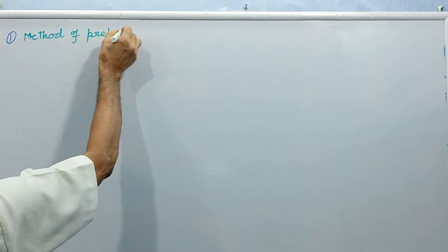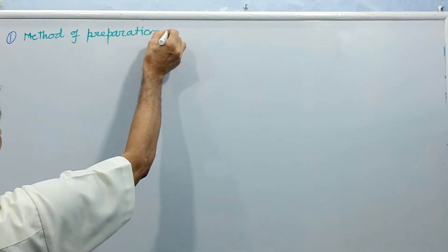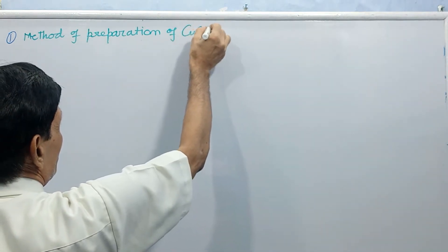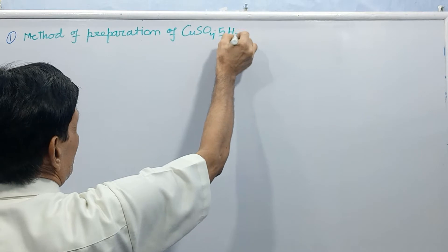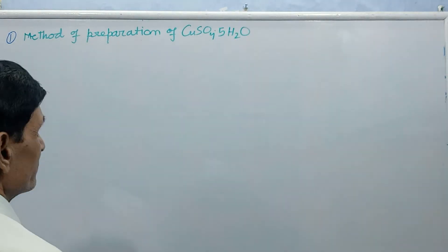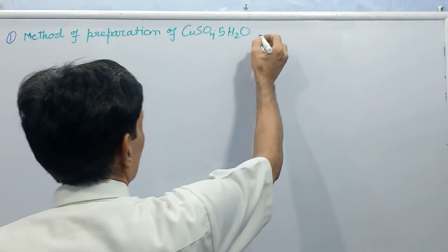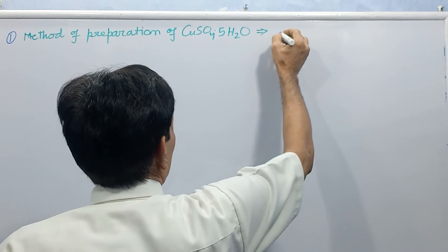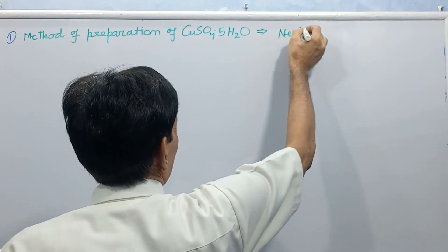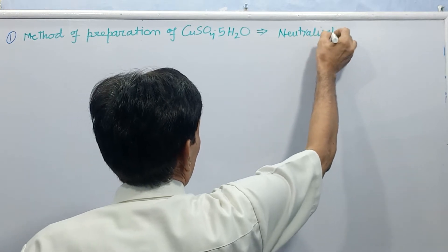First, preparation of copper sulphate pentahydrate. Method of preparation. Preparation of CuSO4.5H2O. This is called blue vitriol. We will use neutralization method.